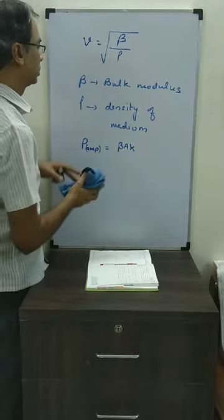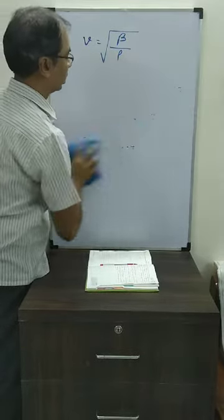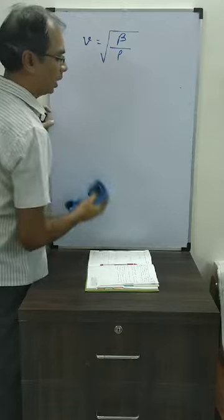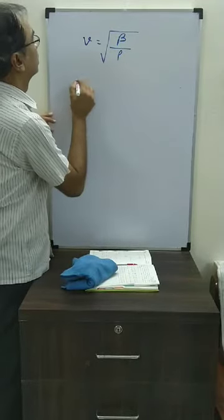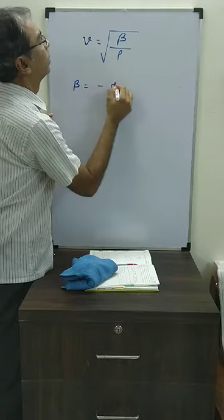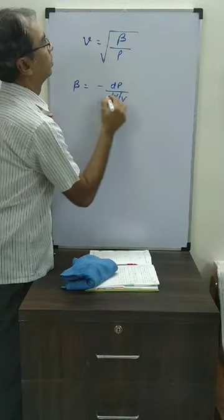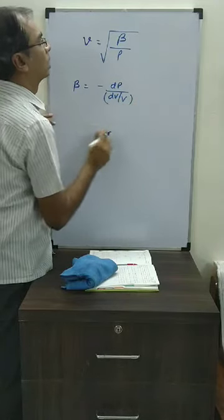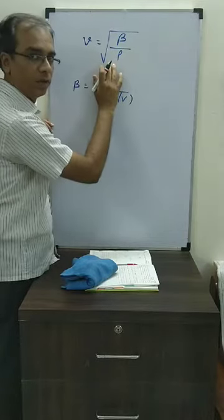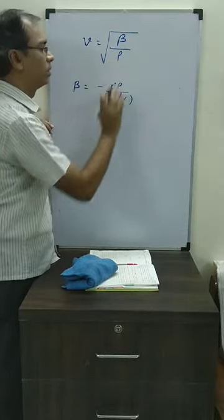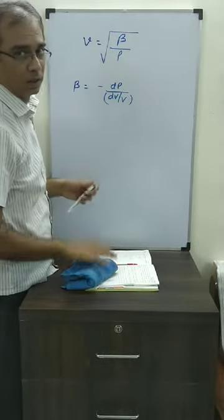Now this bulk modulus, which is normally used for gases and liquids, is basically written as minus dP by dV divided by V. When we talk about velocity of sound, which is a longitudinal wave or pressure wave, there are two theories that we study.